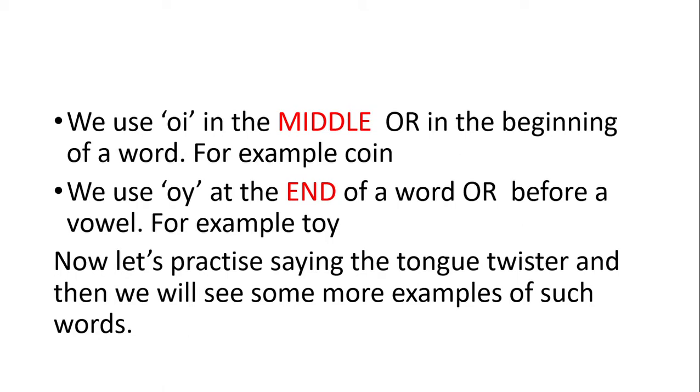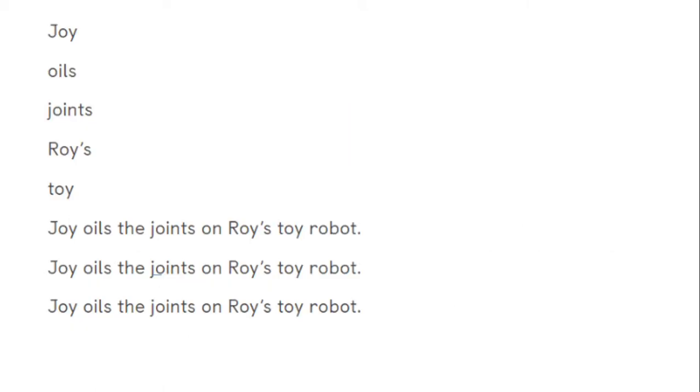Now we are going to practice the tongue twister and we will see many more examples of the oi sound words. Joy oils the joints on Roy's toy robot. Now a bit faster: Joy oils the joints on Roy's toy robot.